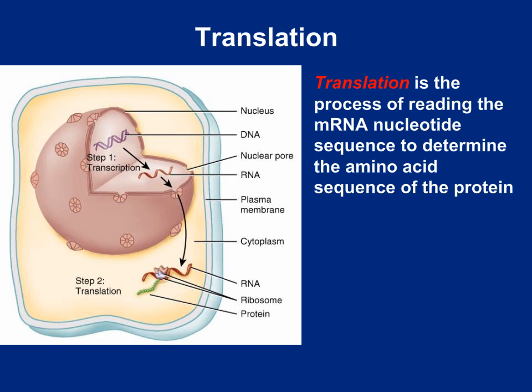To recap: protein synthesis involves two steps — transcription and translation. Transcription happens inside the nucleus, where we copy a small segment from the DNA molecule into a single-stranded RNA molecule — essentially a recipe for an individual protein. That mRNA transcript then leaves the nucleus and enters the cytosol, where the ribosome reads the mRNA and assembles the protein by joining individual amino acids together. Translation is the process of taking that recipe and translating it into a functional protein, and it happens outside the nucleus.